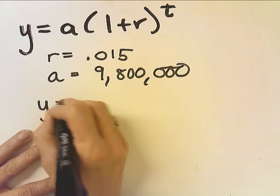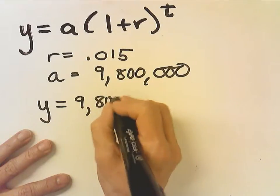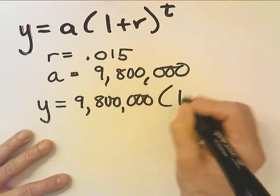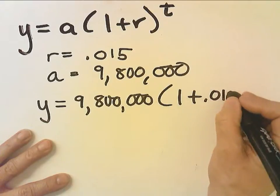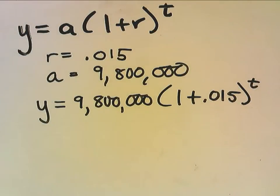So, for my function over time, I say 9,800,000, and it's 1 plus 0.015 to the t. And that would be the answer to the first part. Notice, this is unknown, this is unknown.